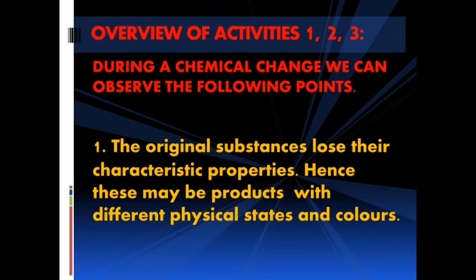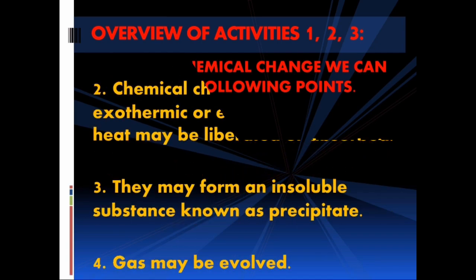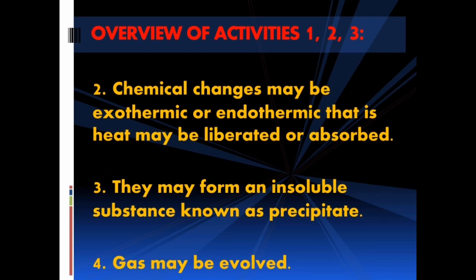Overview of Activities 1, 2, and 3: During a chemical change, we can observe the following points. The original substances lose their characteristic properties — hence there may be products with different physical states and colors. Chemical changes may be exothermic or endothermic, that is, heat may be liberated or absorbed. They may form an insoluble substance known as a precipitate. Gas may be evolved.